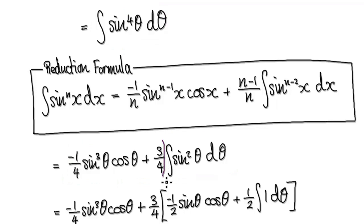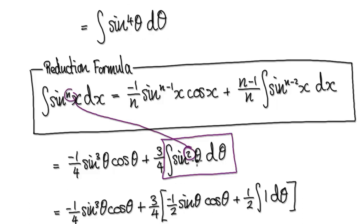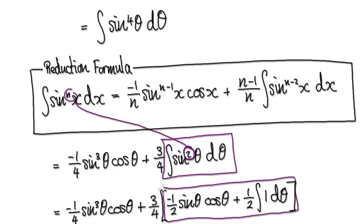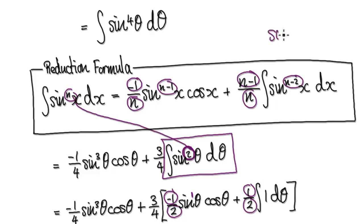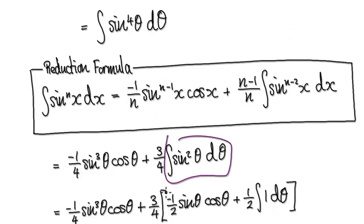Now apply the reduction formula again on the sine squared term. This time our n is 2. Applying the reduction formula with n=2: n minus 1 is 1, and n minus 2 is 0. Since sine to the power of 0 is 1, the integral of sine⁰ is just the integral of 1. So applying the reduction formula on this gives us the next expression.